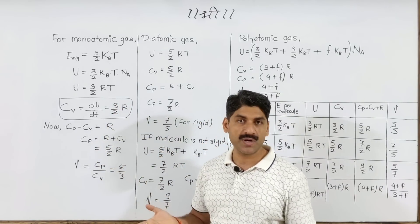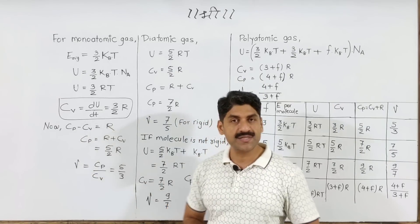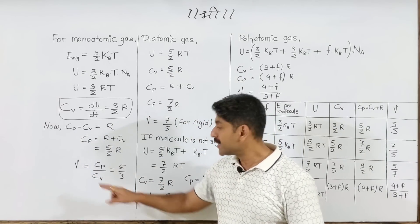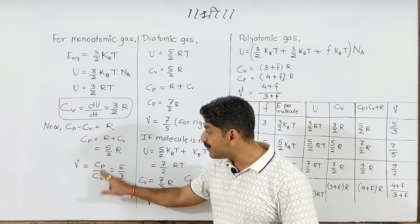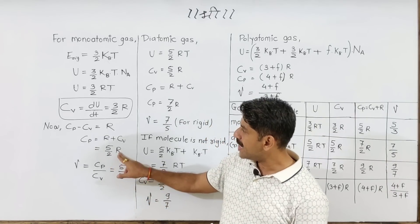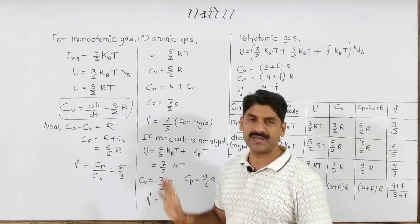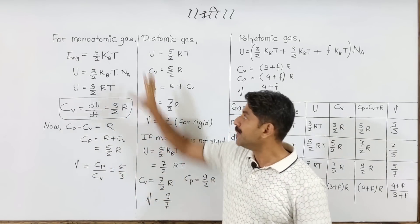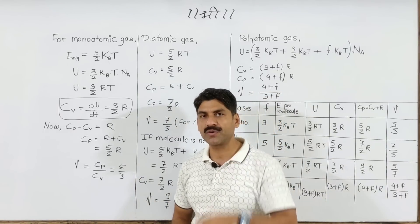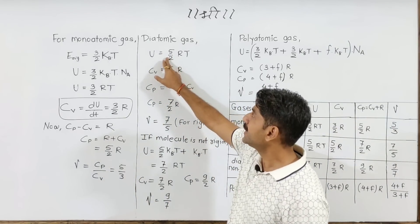Cp equals 5/2 R. And gamma, the ratio of specific heats, is defined as Cp upon Cv. The ratio Cp/Cv for monoatomic gas works out to 5/3, since the numerator is 5/2 R and the denominator is 3/2 R.